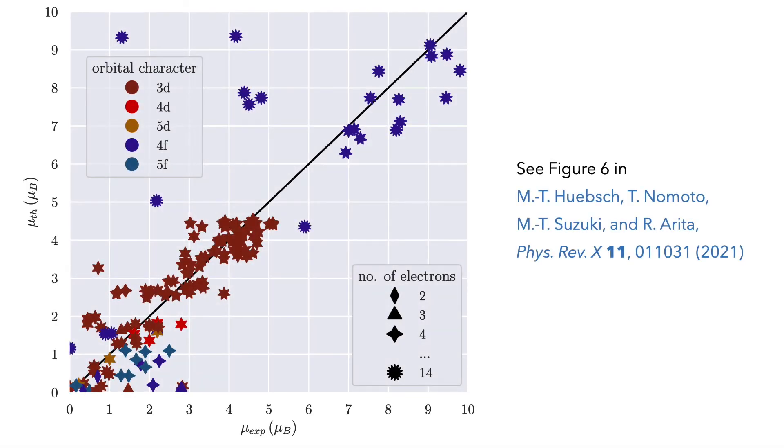Another compelling observation is that we can predict the size of the on-site magnetic moment. Here you see the experimental magnetic moment on the horizontal axis and the theoretical magnetic moment on the vertical axis. If all data points were to align on the black line, the prediction would be perfect.